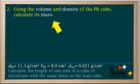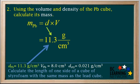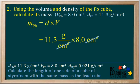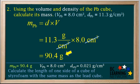In step two, we use the volume and the density of the lead cube to find its mass. We use the formula M equals D times V. The density D of lead is 11.3 grams per centimeter cubed, and the volume of the lead cube is eight centimeters cubed. Cancel out the centimeters cubed and multiply 11.3 times eight, and we get 90.4 grams of lead. This is now noted in the information below.